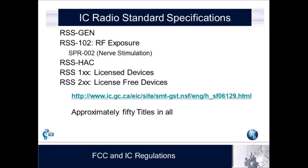On the ISED side in Canada — formerly known as Industry Canada or IC, recently renamed ISED through their government election cycle — the Canadian requirements can be found in their Radio Standards Specifications, the RSSs. There are approximately 50 of them in total, and a link is provided on the webpage showing how to access them.